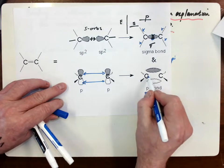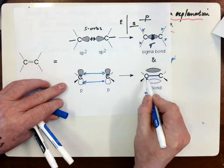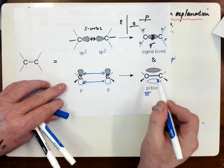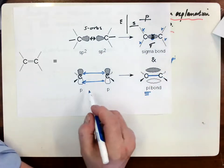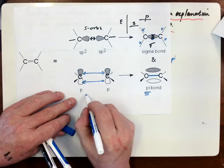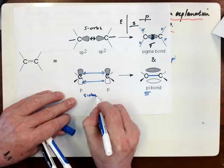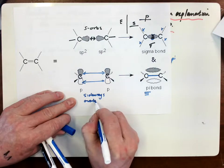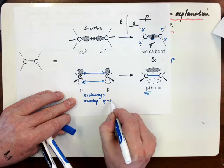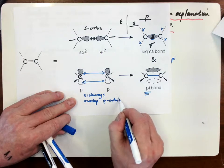So my sigma bond forms first between the two carbons. My pi bond forms a little bit further away because it's formed by, and note again the terms that I'm using, it's formed by sideways overlap of P orbitals.